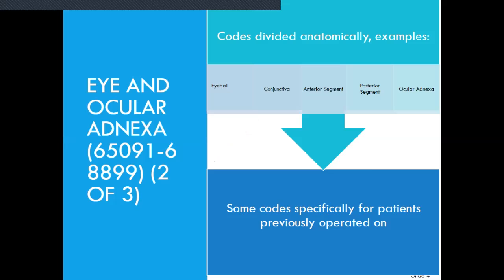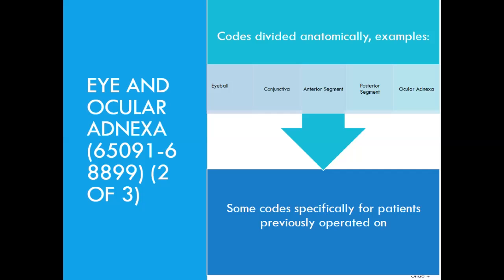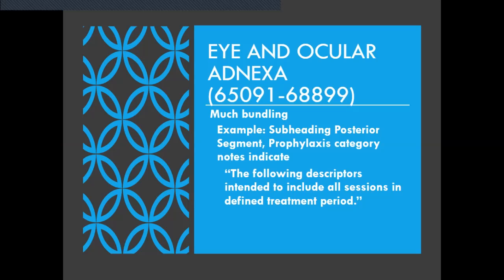The eye and ocular adnexa codes are divided anatomically — for example, the eyeball, then the conjunctiva, then the anterior segment, then the posterior segment, and the ocular adnexa. Those are how the codes are divided. Some codes are specifically for patients previously operated on. That's just one of those little FYIs. As you're coding, you're going to be able to point those out very quickly.